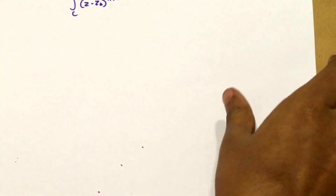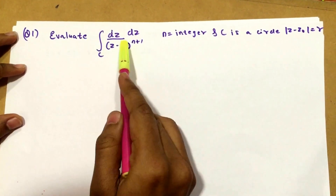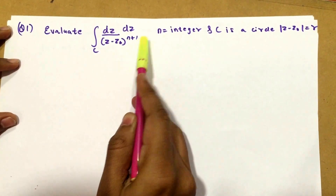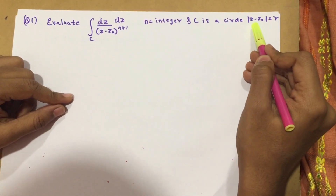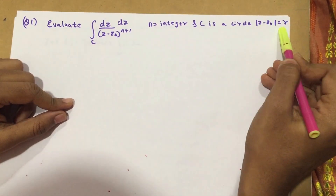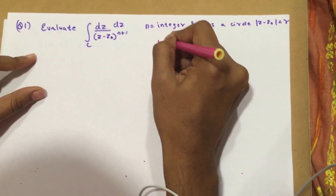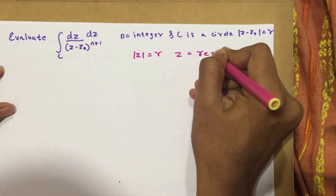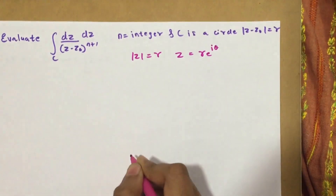So let's get started with the examples. The first question is: evaluate ∫dz / (z − z₀)^(n+1), where n is an integer and C is the circle |z − z₀| = r. So this is a complex circle. Now as you know, when |z| = r, I can write z = r·e^(iθ).